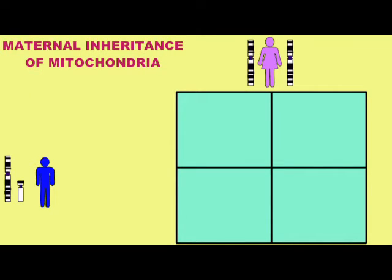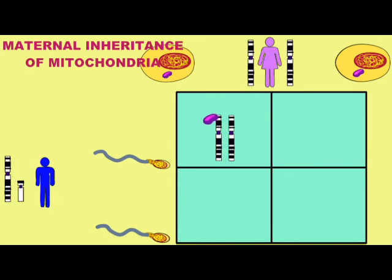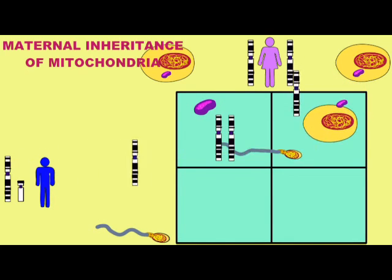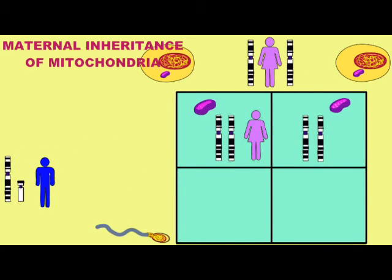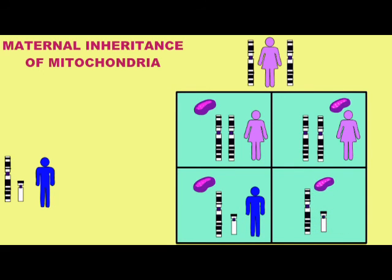Since all children inherit their mitochondria from their mother, mitochondrial-influenced diseases are examples of maternal inheritance, but heteroplasmy complicates the form of inheritance which can be observed. In some animals, it apparently occurs that sperm can donate mitochondria to the embryo and thus affect the inheritance of mitochondrial traits. It is possible that this occurs very rarely in humans as well.